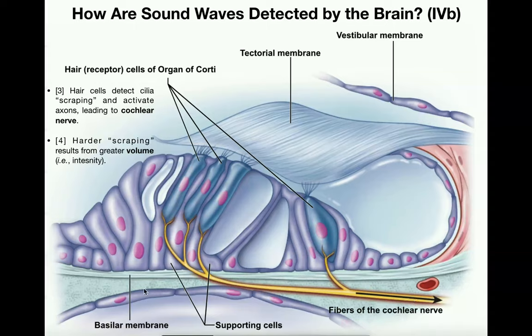Harder scraping results from greater volume. For example, if a soprano singer performs a particular note very quietly and then sings the same note very loudly — fortissimo — the louder version elicits the same basilar membrane to vibrate because it's the same frequency, but the basilar membrane vibrates harder. The cilia scrape against the tectorial membrane harder, and the harder the scraping, the louder your brain perceives that sound.